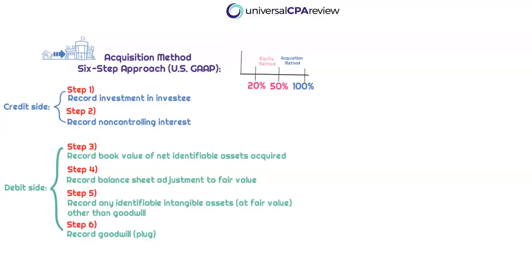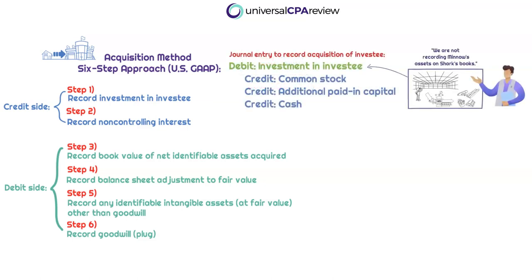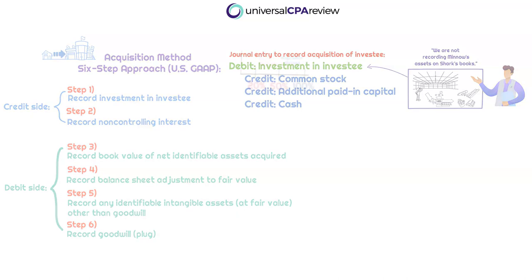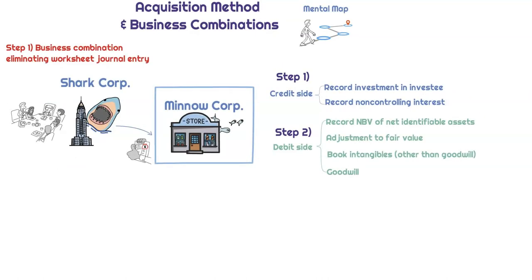This is where the acquisition method becomes automatic points on the exam. Follow my lead and you're going to get these questions right. Taking a step back, let's ask ourselves where we are. We walked through the initial journal entry at the date of the acquisition. What happens when a company like SharkCorp has acquired over 50% of a subsidiary is they now have control. So at the end of the year, they need to record this eliminating worksheet journal entry, which represents consolidation adjustments. The point of the acquisition method is that we're going to be making these adjustments when we are doing the consolidation process.